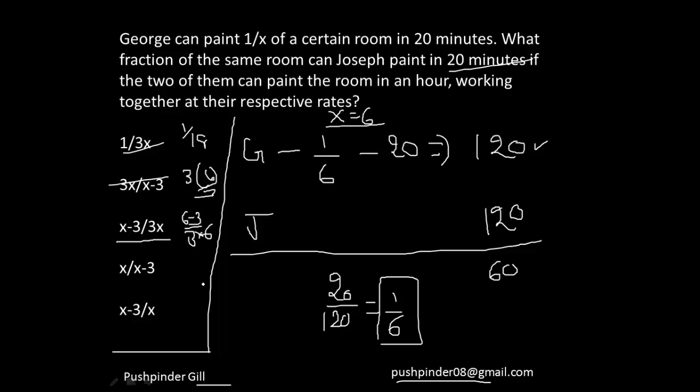Let me make sure that all other options are giving me different answers. So this is nothing but 6 upon 3 which is not my answer. This is nothing but 3/6 which is again not my answer. So that means my answer is this option.